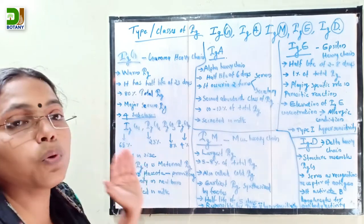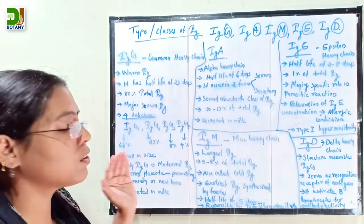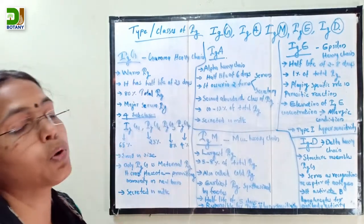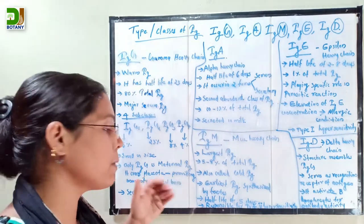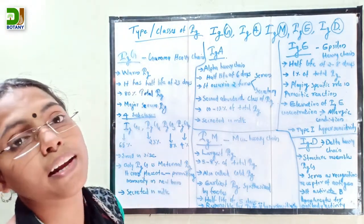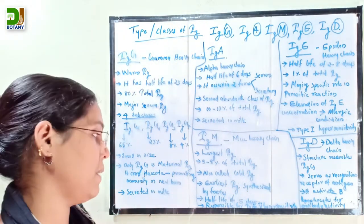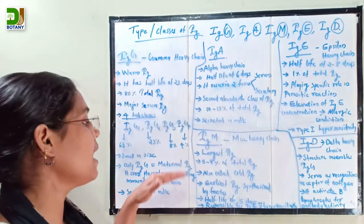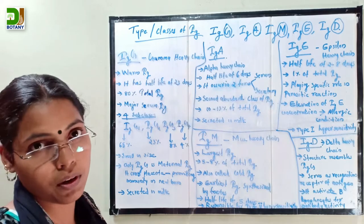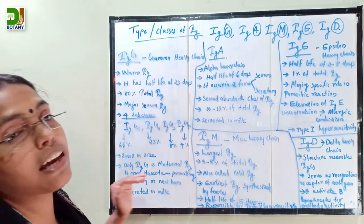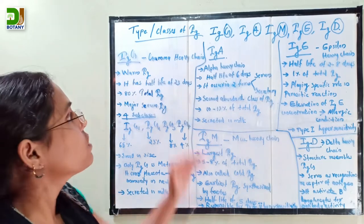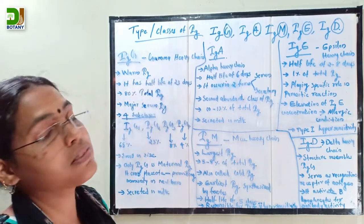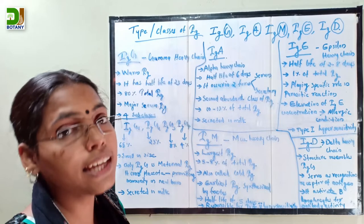Immunoglobulin G is the only maternal immunoglobulin that crosses the placenta, providing immunity to newborn babies. It is also secreted in milk.